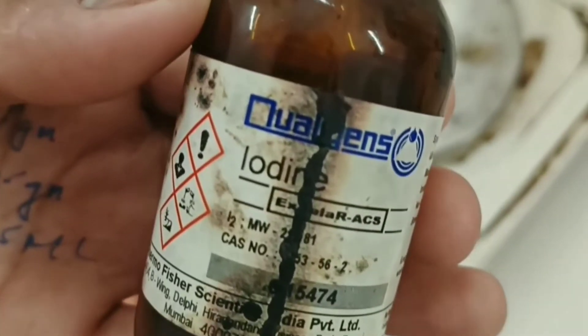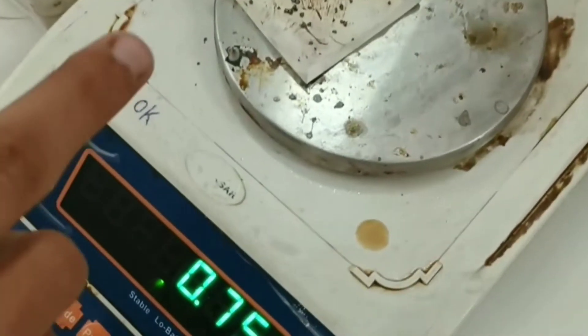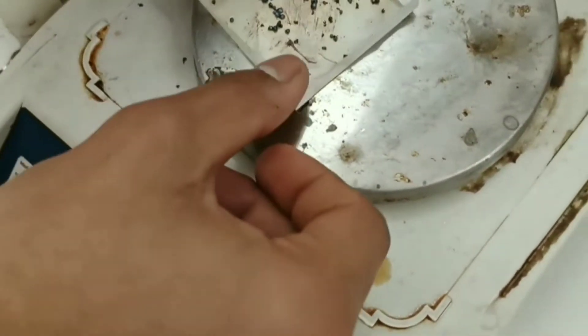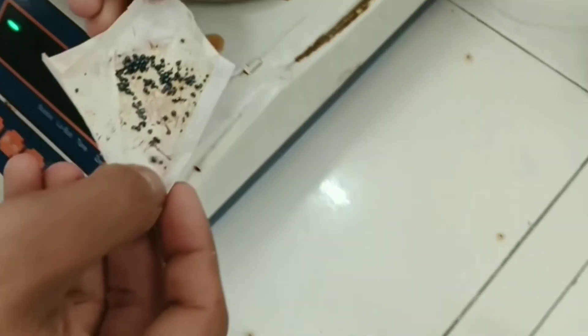Now we will take 0.75 grams of iodine and transfer it into the potassium iodide solution and mix it with a glass rod.